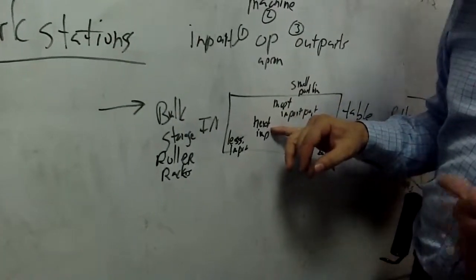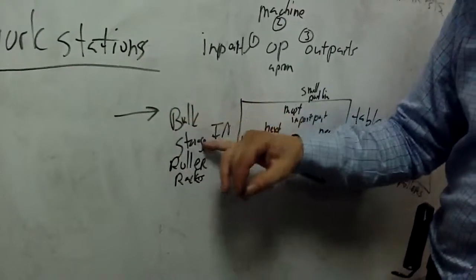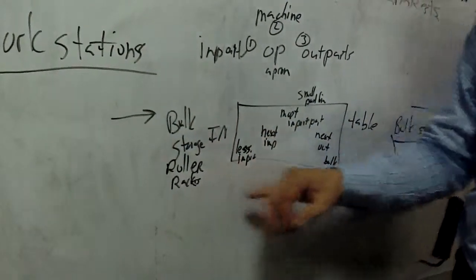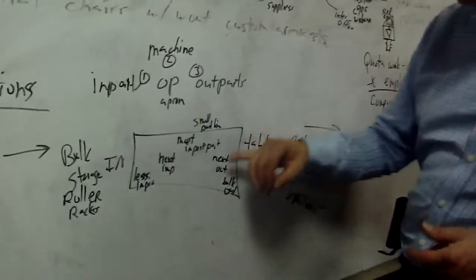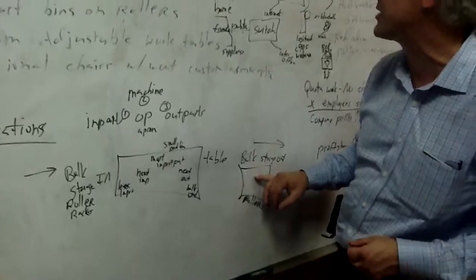The most important parts are closest to them. The next important parts, which is the larger bulk, is here, and the less important, which is the bigger bulk, is there. Here's the input, which has the bulk storage parts on roller racks. On the other side of your table, you have the things that come off the table, and now they're put on roller storage that go to the next workstation.